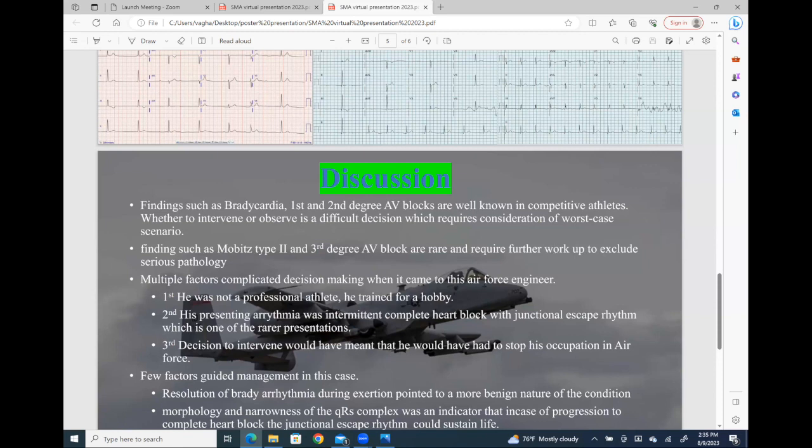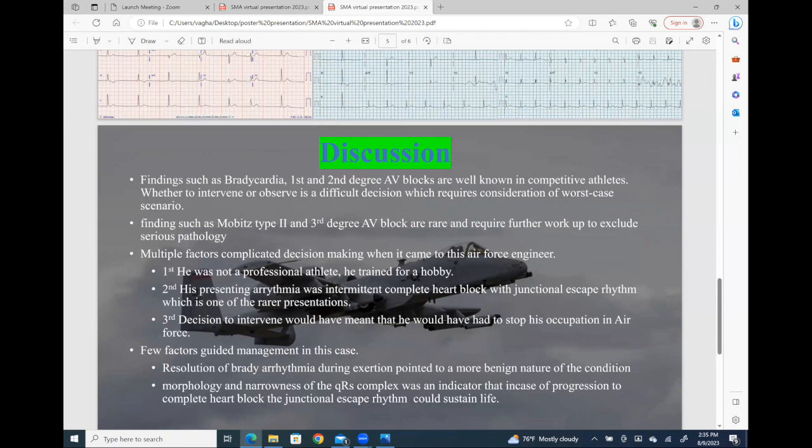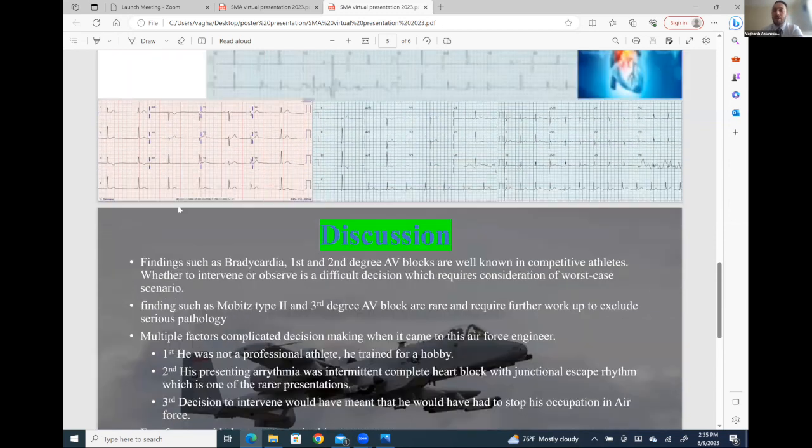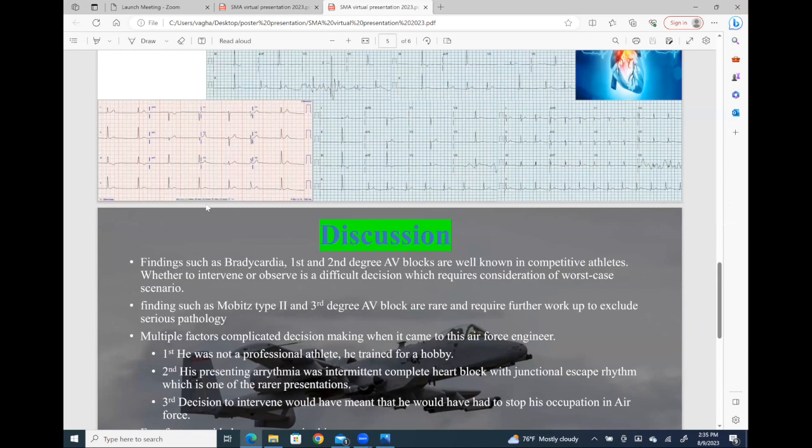So because of this we decided that this patient does not need a pacemaker. There is always the concern that if this patient develops complete heart block outside when not under care of a doctor, it could be dangerous. But given that the junctional escape rhythm was a narrow complex, this points out that the origin of the complex is very close to the AV node. If he was to develop a complete heart block, he would have a rate that would sustain life until he can reach a medical center and have a procedure done.